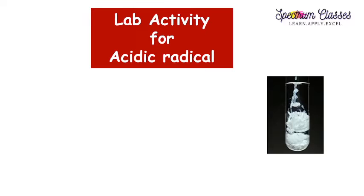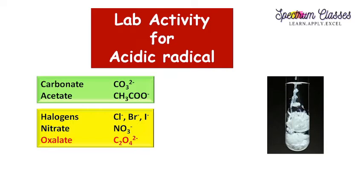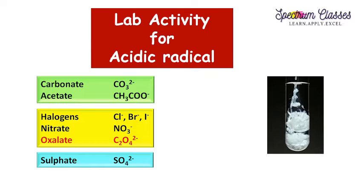Hello guys, welcome back to Spectrum Classes. In this video I am going to show you the lab activity for acid radicals. From Group 1 we are going to cover carbonate and acetate acid radicals. From Group 2 we are going to cover halogens — chloride, bromide, iodide, nitrate, and oxalate acid radicals. From Group 3 we are going to perform the experiment for sulfate acid radical. So let's start with the lab activity.